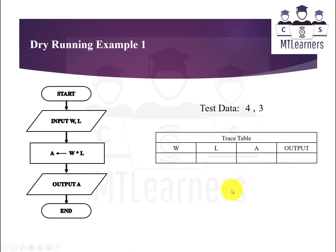First of all you will start, then it will move towards input. Input is W and L, that is width and length. 4 is represented as width, so 4 will be placed here in this box. Then the second value is 3, that is length. Length will be placed in the box that is represented for length.